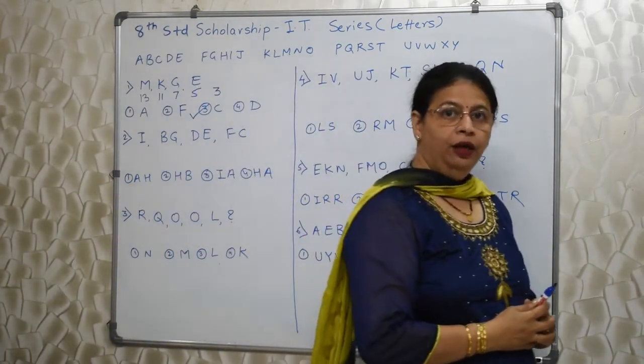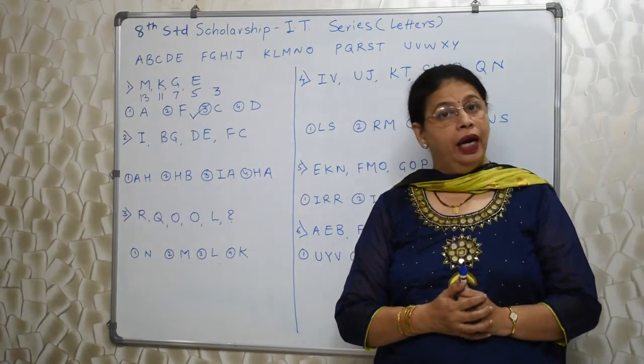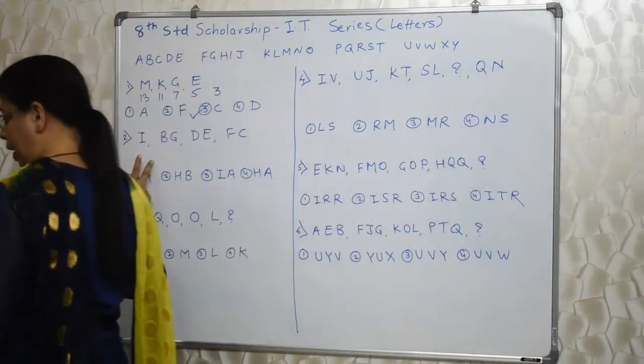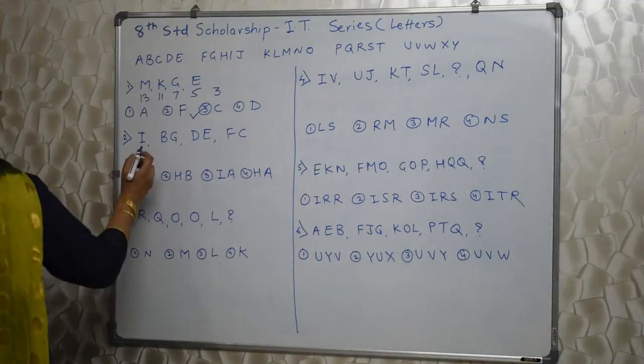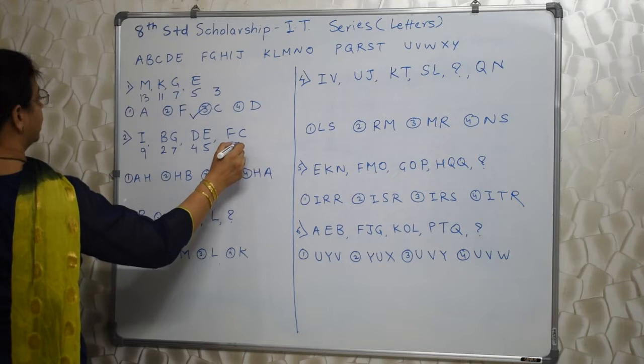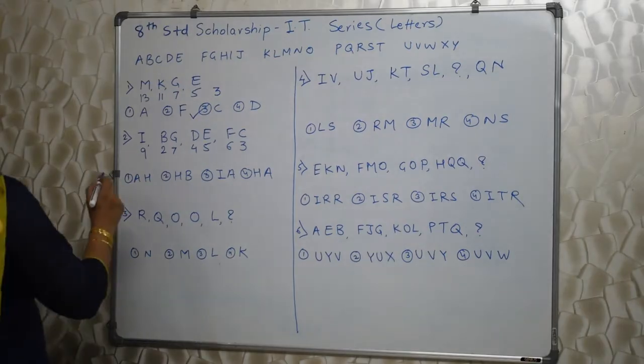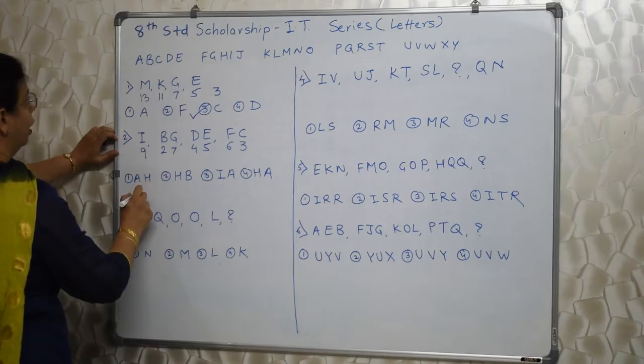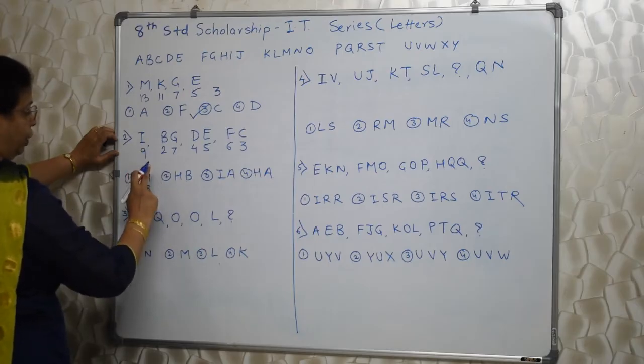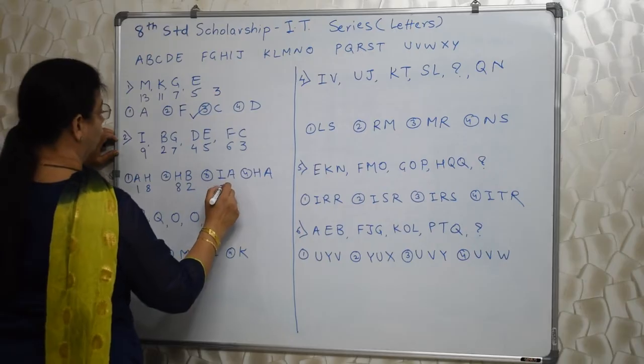Here again, you are expected to know different types of numbers. In case you need any assistance, I have already uploaded 2 videos on types of numbers. Next one, again write down the serial numbers. I is 9, B is 2, G is 7, D is 4, E is 5, F is 6, C is 3. 9, 27, 45, 63. All are multiple of 9.